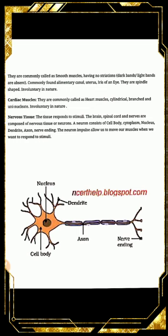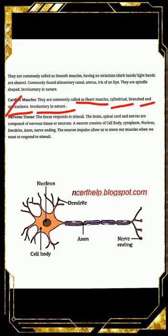Next is cardiac muscle. Cardiac muscles are the muscles of our heart. Their structure is a combination of both striated and unstriated muscles — like internal organ muscles they have no surface lining, but like striated muscles, light and dark bands are present. They are branched and work continuously without fatigue. They are cylindrical, branched, uninucleate, and involuntary in nature — they regulate on their own.